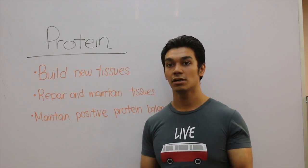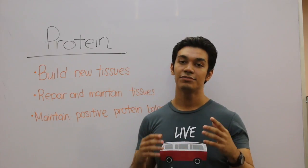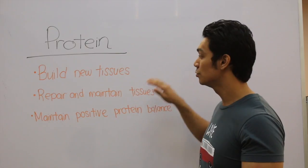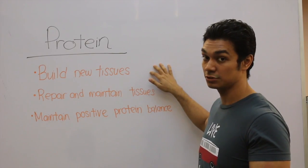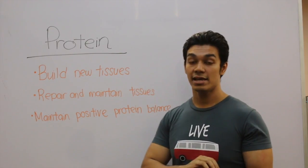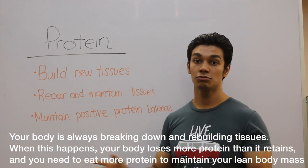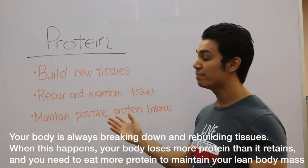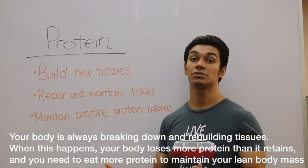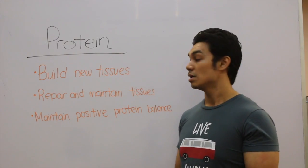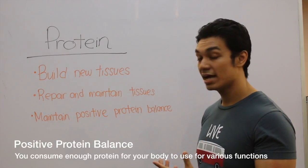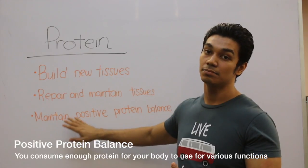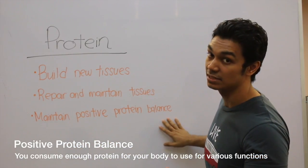The second macronutrient we're going to talk about is protein. Now if your goal is to build muscle, protein is going to help you to build new muscle tissues. For anyone else and those who are not going to the gym, protein is going to help you to repair and maintain your current tissues. You will always want to have sufficient protein in your body to make sure that you always maintain a positive protein balance.